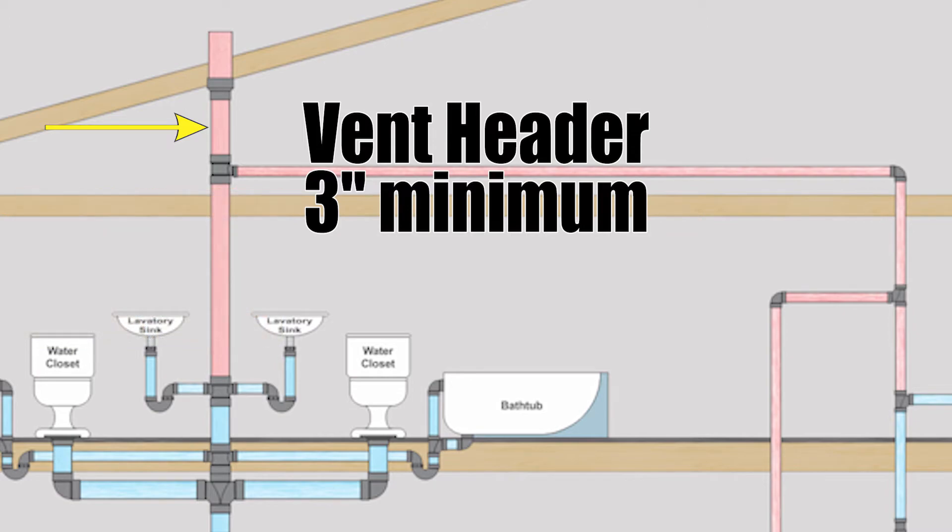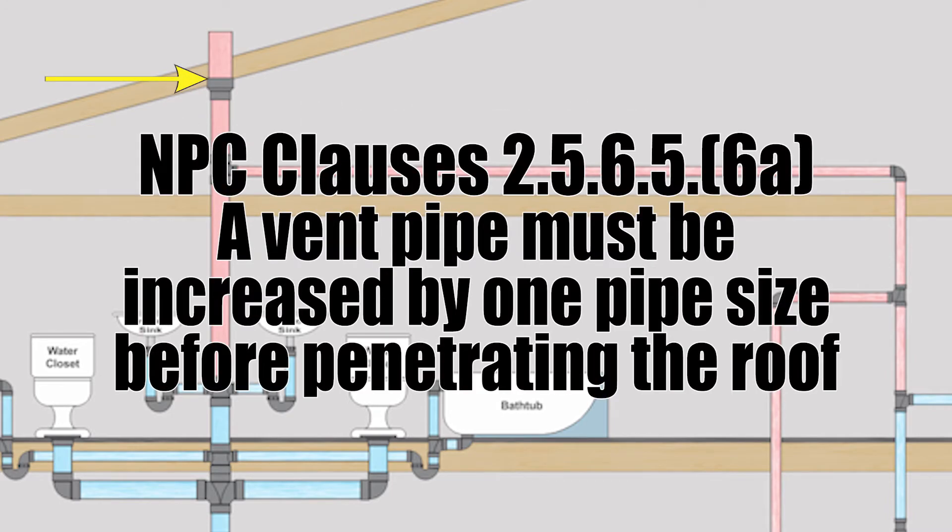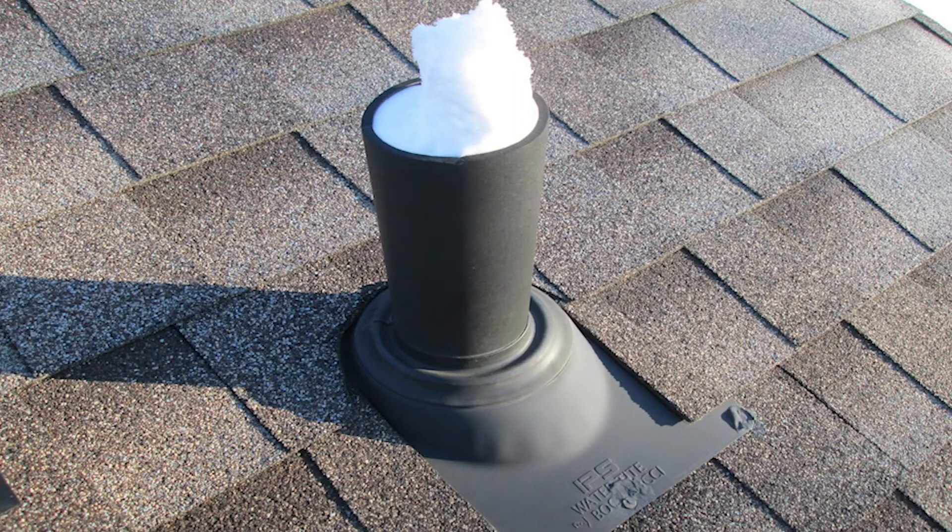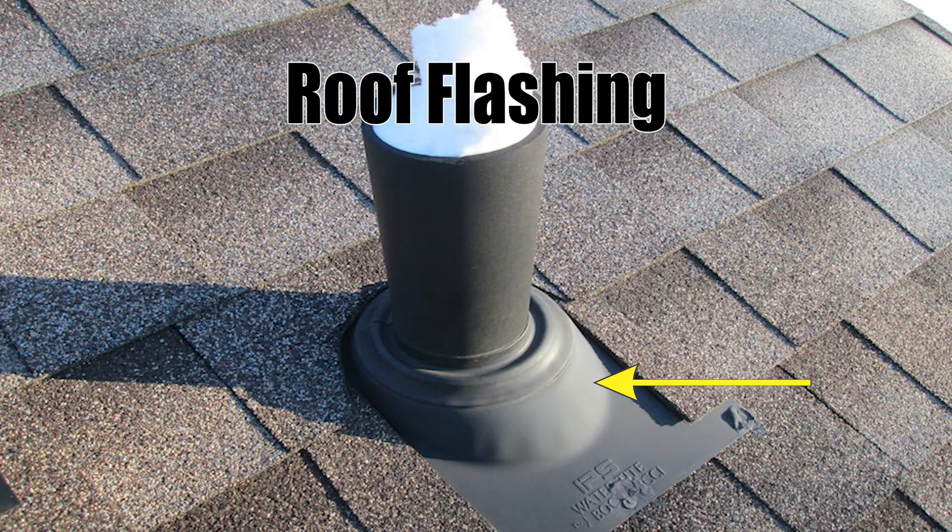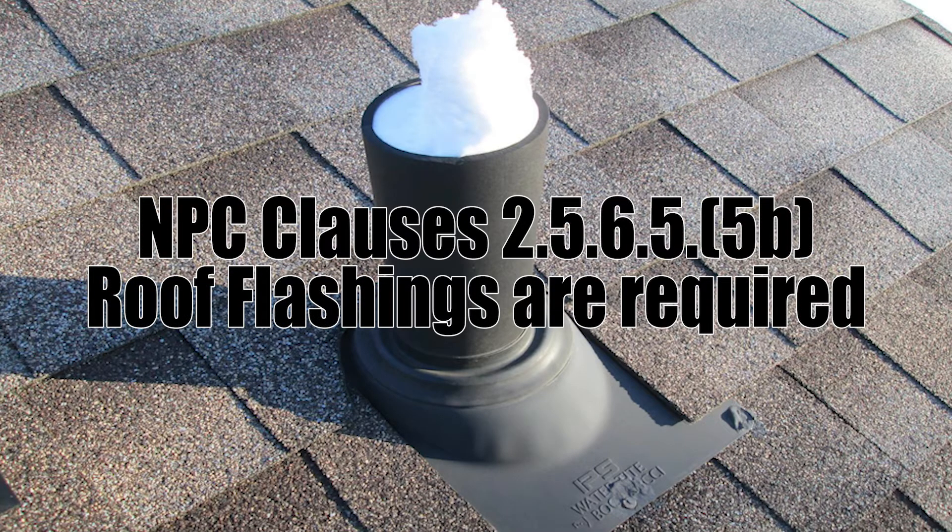So yes this vent header will be three inches in size and it will increase one pipe size before passing through the roof. Now this is to prevent frost closure on cold winter days in areas like where I live. This rubber device that goes around the pipe and goes underneath the shingles is called a roof flashing. This prevents rainwater from coming down around the pipe and making its way into the building. It makes a watertight seal.